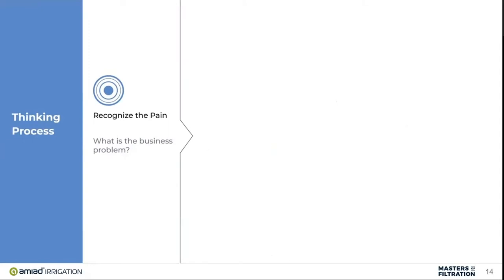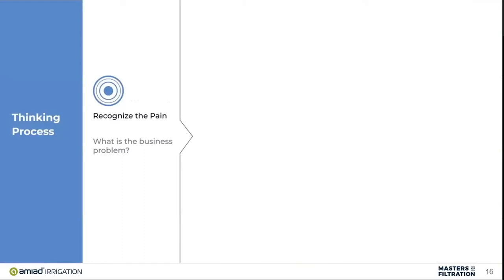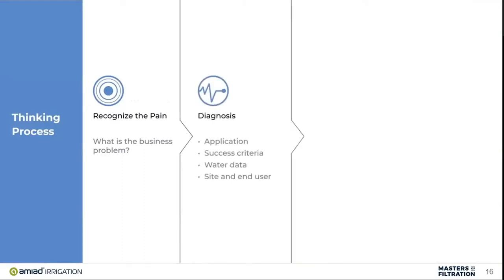Recognizing the pain means: what is the business problem or the filtration and irrigation problem we're dealing with? If you're dealing with a site that has recycled water, canal water, or various types of water, we want to look at all those different aspects to recognize the biggest challenge. Some of these pains could be regulation, manpower, consumables, production downtime, or product quality — meaning our crops, which in the landscape is our grass, plants, and shrubs.